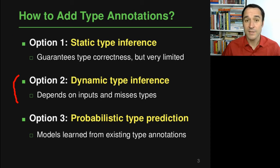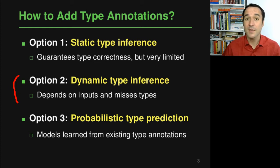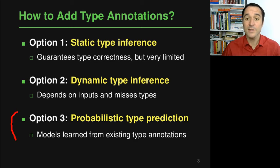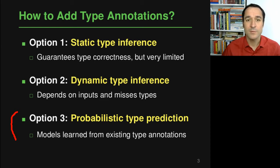Option number two is dynamic type inference: you run your program and at runtime observe some types, then add them to the source code. The problem is that depending on the inputs you may see some types but not all possible ones, and you may miss many types if not all code is covered. Option number three — and this is what we use here — is probabilistic type prediction, where a model learns from existing type annotations and predicts more types to add to the program.